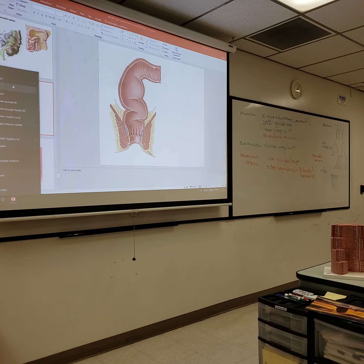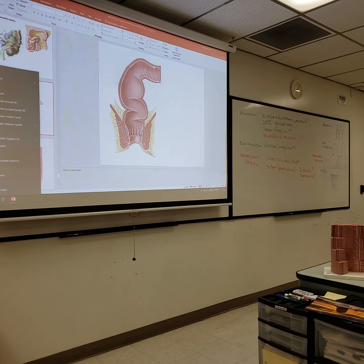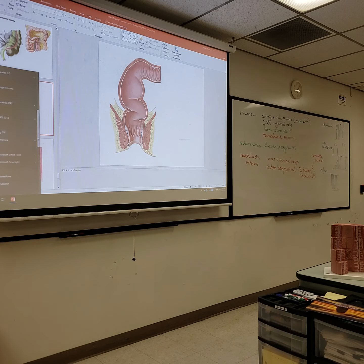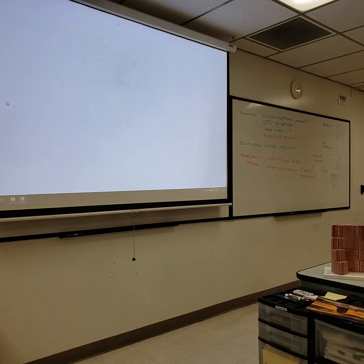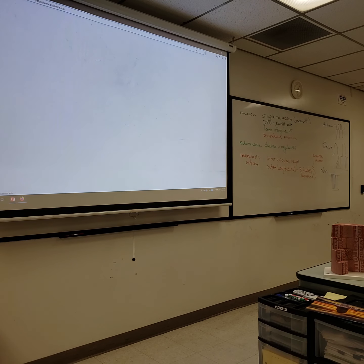The angle you see here is the levator ani muscle that forms a bowl — the floor of the pelvis. There are a couple of portions: the puborectalis and pubococcygeus that contribute to that structure.